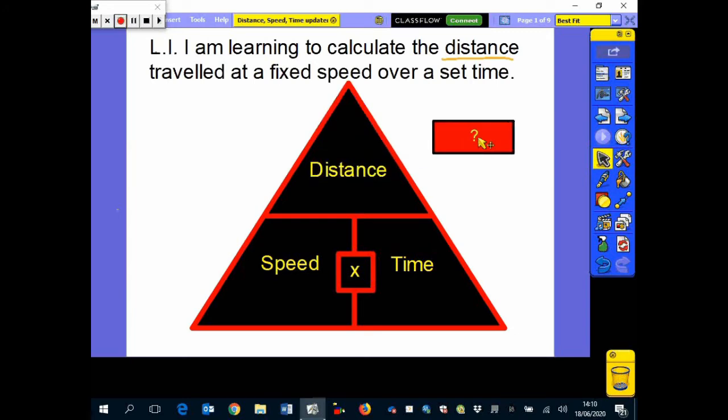So in this case we're wanting to work out the distance. So how do we work out the distance then? Well according to this diagram it is the speed that you're going times the time that it's taking you. Why that is we're going to examine in a minute but all we need to really remember is that if we use this diagram we cover over the thing that we're wanting to work out and then just do the calculation that the diagram tells us to.